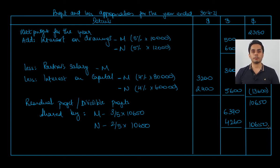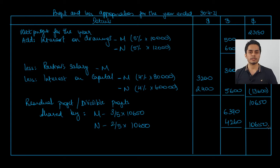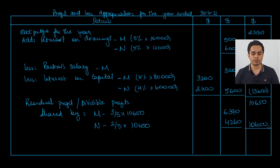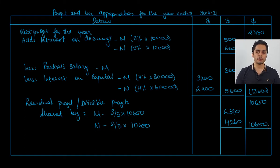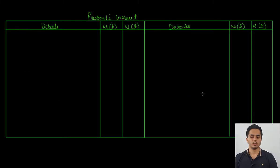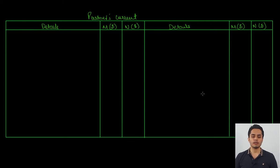Next, we are going to prepare the current accounts of the partners. Whatever adjustments are done in the profit and loss appropriation account will be transferred to the partner's current account. Apart from these, we would also consider the drawings. We have a columnar current account, meaning in the same account we maintain the current account for both partners on both the debit and credit sides.